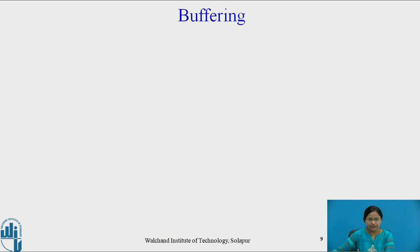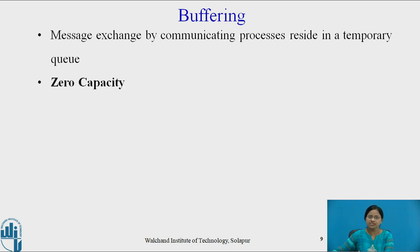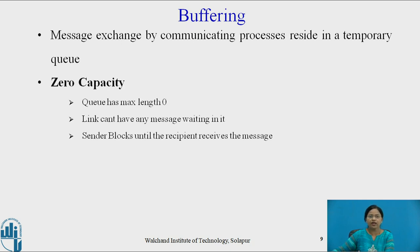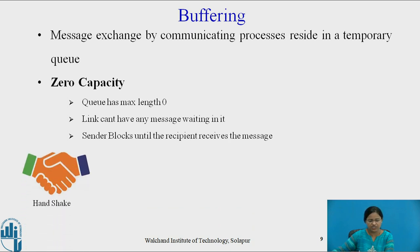Next is buffering. In buffering, the communication may be direct or indirect. Messages exchanged by communicating processes reside in a temporary queue, which can be implemented in three ways. First is zero capacity: the queue has maximum length zero, the link cannot have any message waiting in it, and the sender blocks until the recipient receives the message — so blocking send is used. Zero capacity is applied in handshaking.